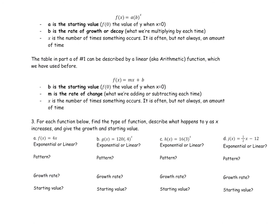When we look at exponential functions, we have Y equals A times B to the X, where A is our starting value and B is our multiplier — what's being multiplied every time. X is our variable, and F of X is the same thing as Y. We also worked with linear functions: the first table, part A, was a linear function — MX plus B. It was adding 2 every time, so 2 would be our slope. Our Y-intercept is where X equals zero.